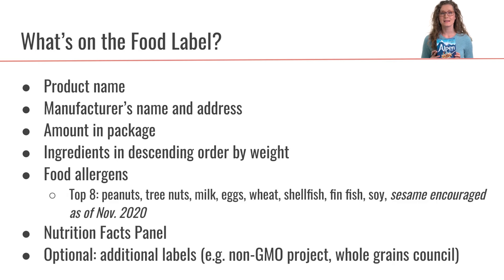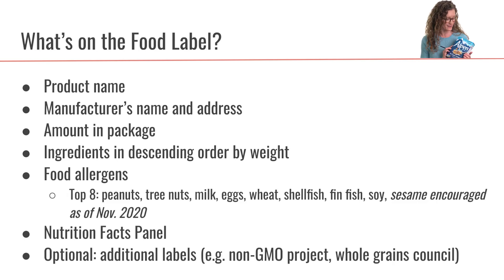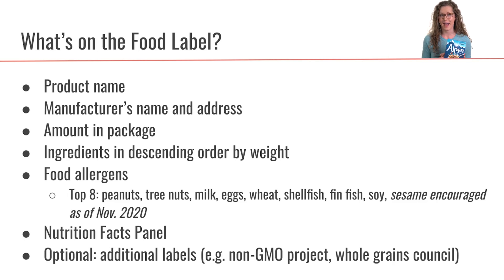The next requirement is the manufacturer's name and address. You can look around your food package to see where that is. I see it here: manufactured for Three Sister Cereal, PO Box, Lakeville, Manitoba — product of Canada. I actually didn't know that. I love this muesli and I'm from Canada, so that makes me like it even more. Next, the food label has to state the amount in the package. We see that here: net weight, 14 ounces.